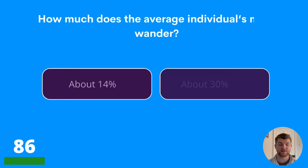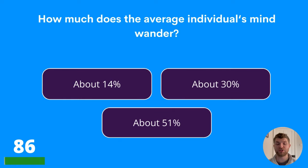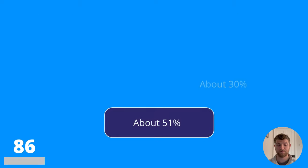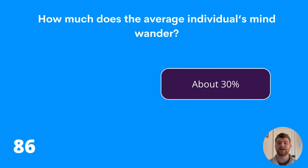Question eighty-six: how much does the average individual's mind wander? About 14%, about 30%, or about 51%? The answer is about 30%.